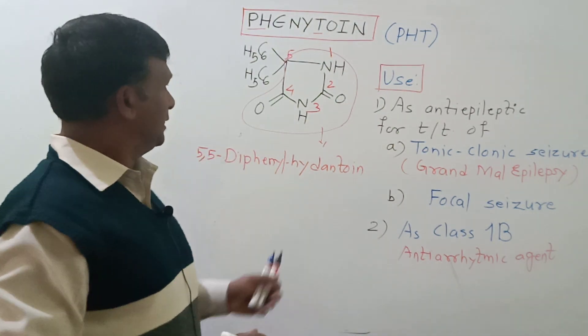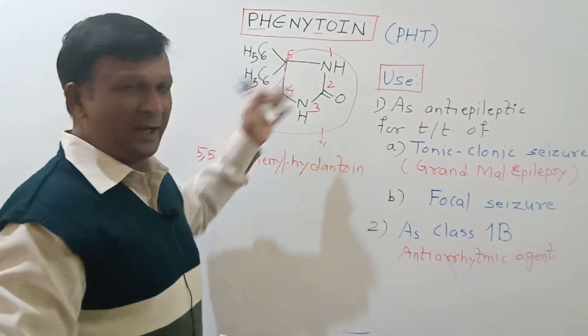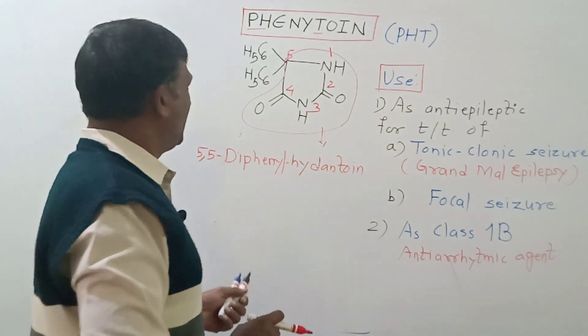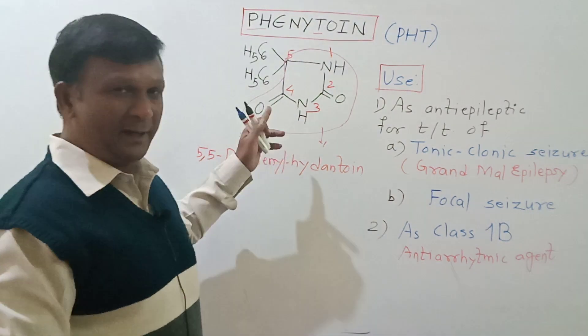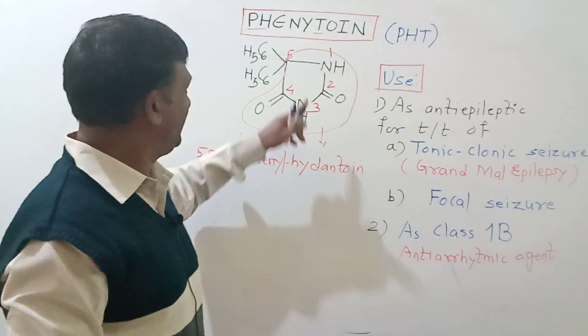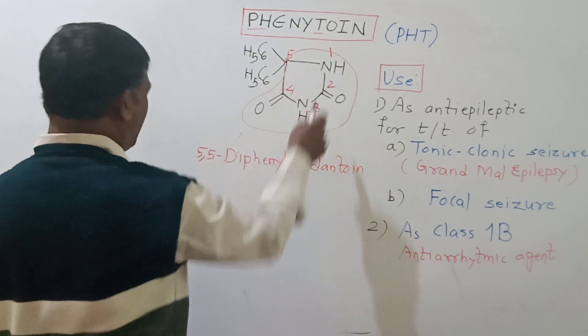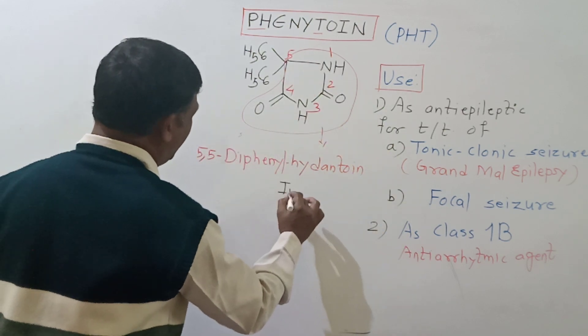The second way of nomenclature is to use the heterocyclic ring system. The heterocycle present here is imidazolidine ring. It is a saturated ring, so the name given to this ring system is imidazolidine.